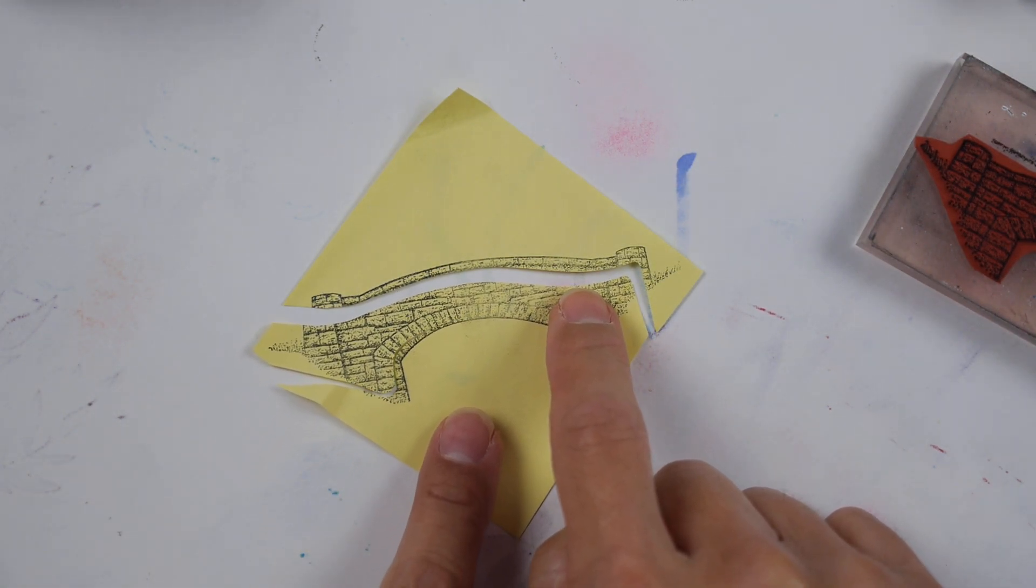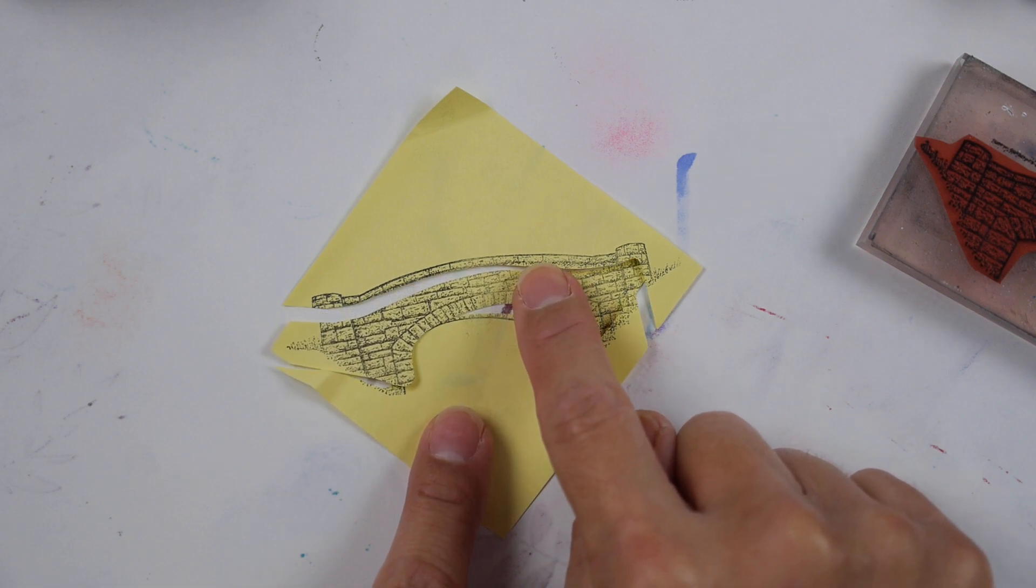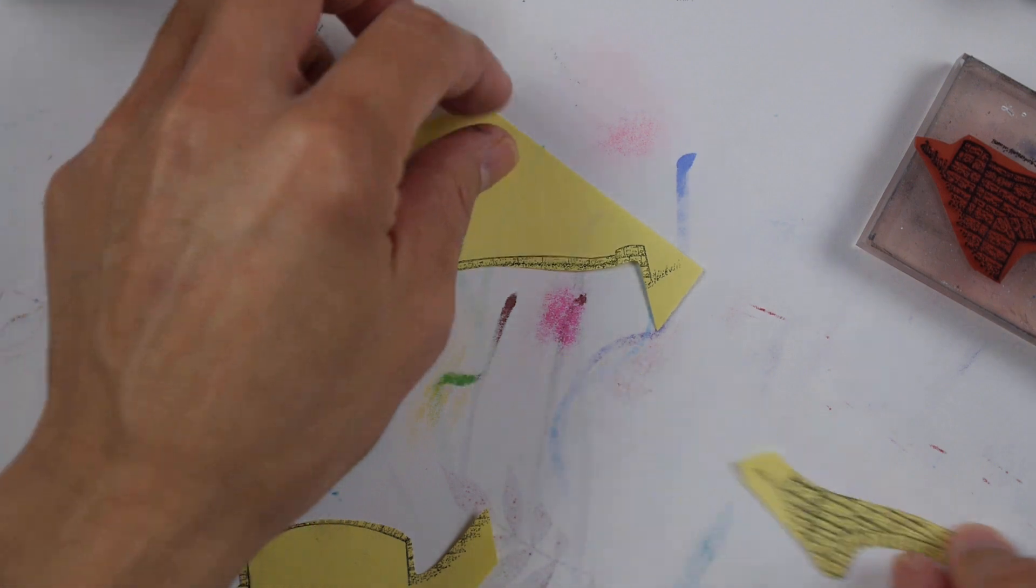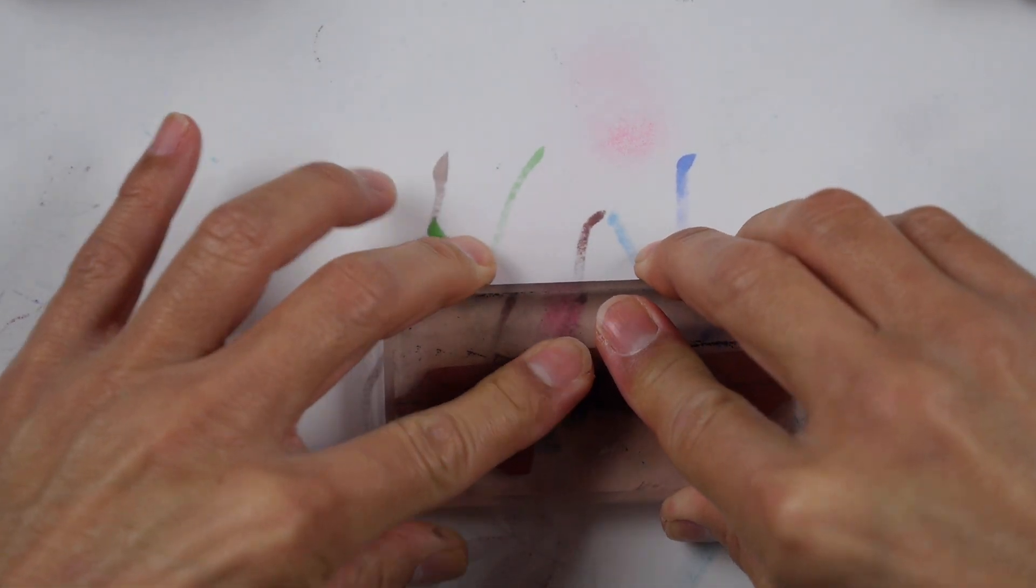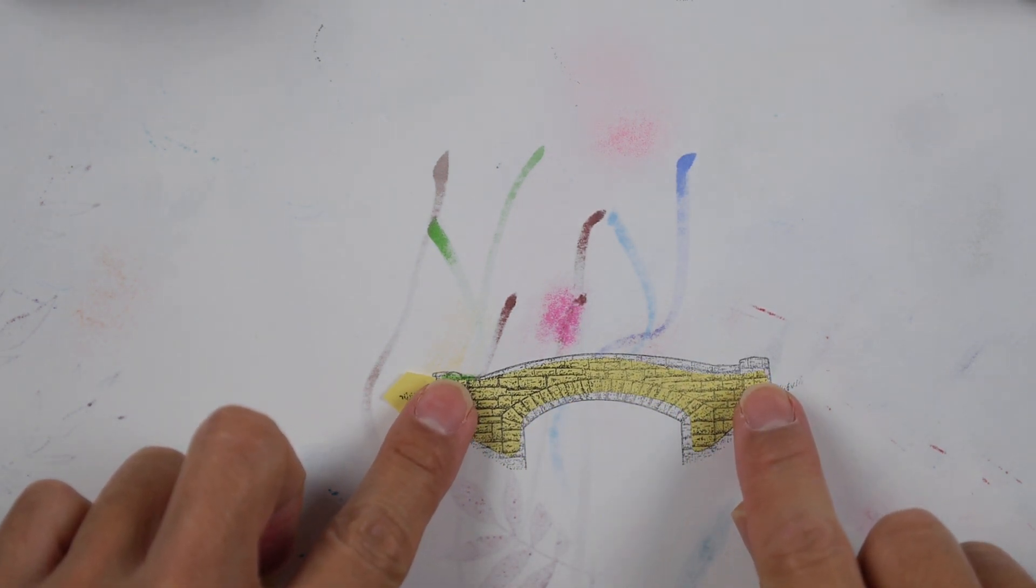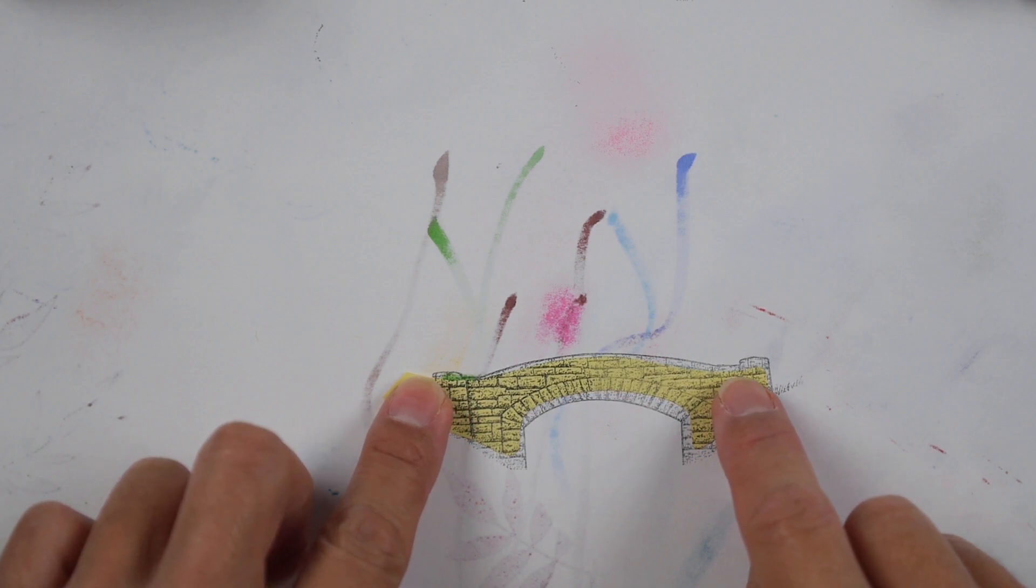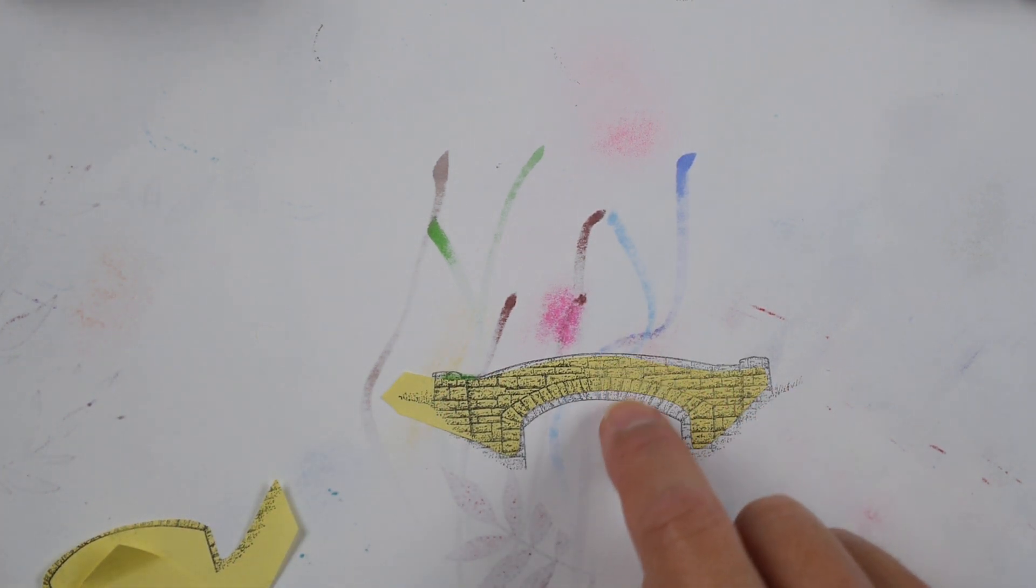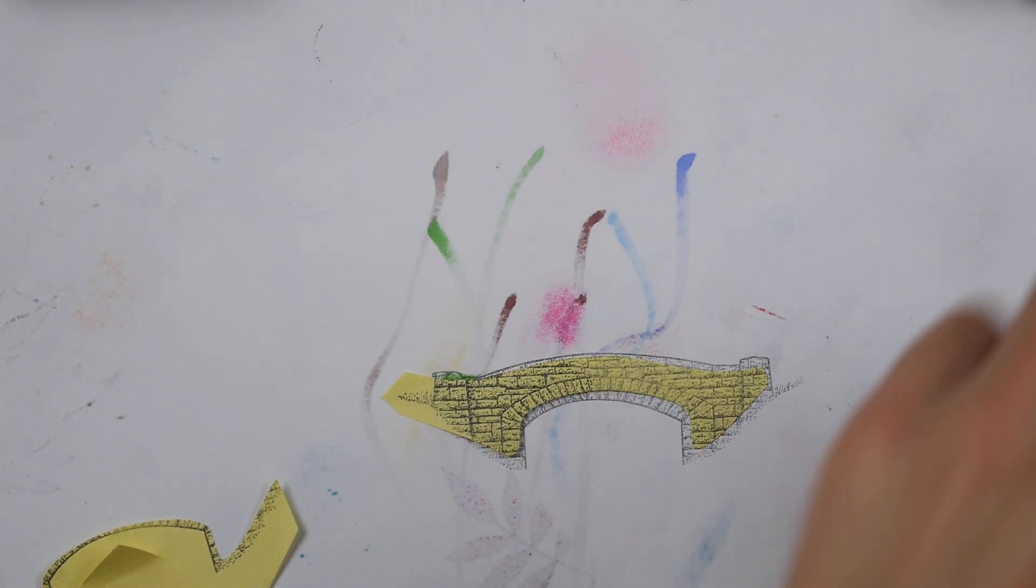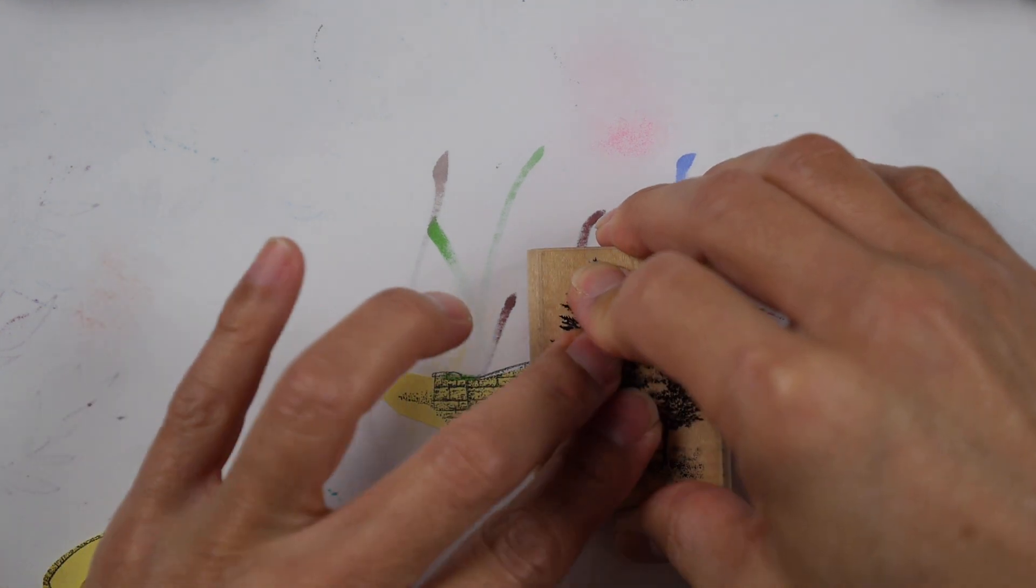Now the reason why that is, is because if I cut it out perfectly around there and that was my mask, when I put this piece of paper over an impression of this bridge, if this goes all the way up to the top and the bottom flush with that impression down there and I stamped something over the top of it, let's just do this right now. Let's just stamp this on like that.